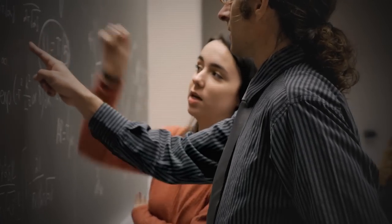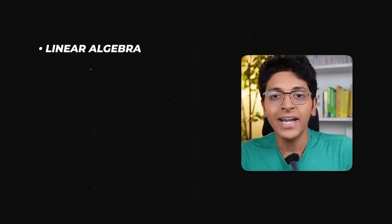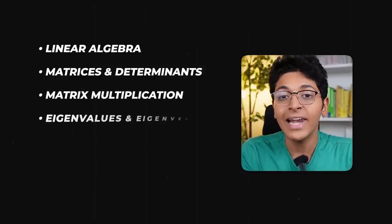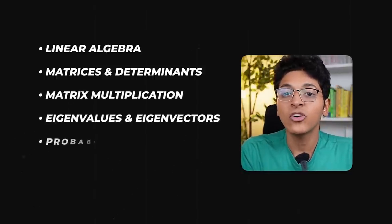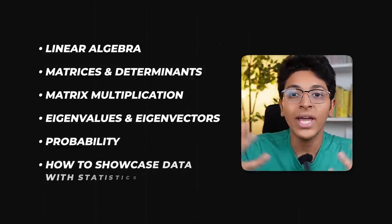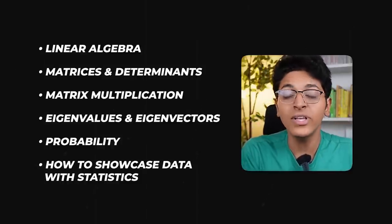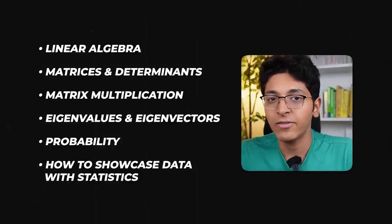Starting with the first one, and that is about maths. Before we talk about AI, machine learning, data science, you need to understand the underlying mathematics. Don't worry, you don't need to solve all the questions — that can be handled by the computer. You need to focus on understanding the concepts of linear algebra, matrices and determinants, matrix multiplication, eigenvalues and eigenvectors, different types of probabilities, and how to showcase data with the help of statistics. All of this is very important before we jump into the world of machine learning and artificial intelligence.